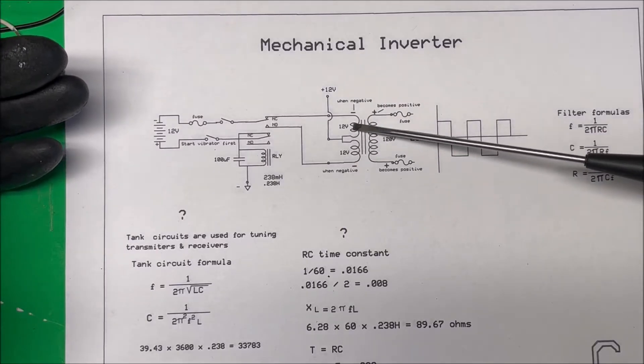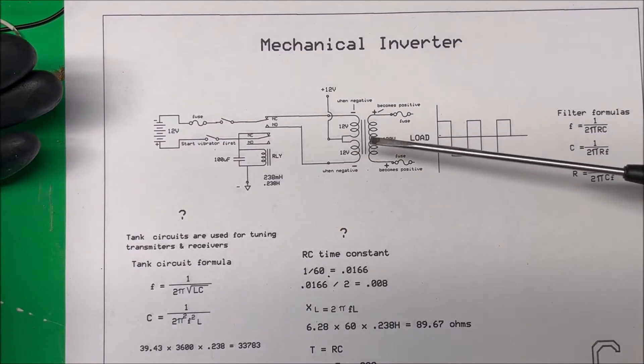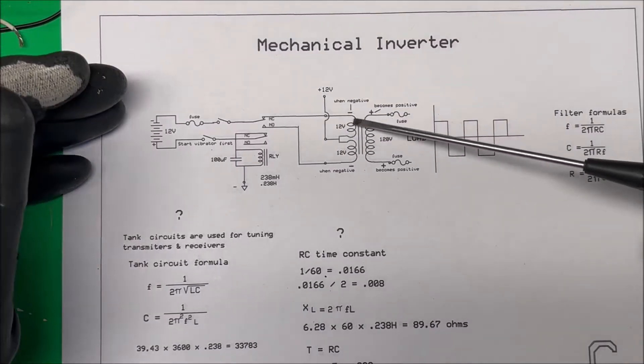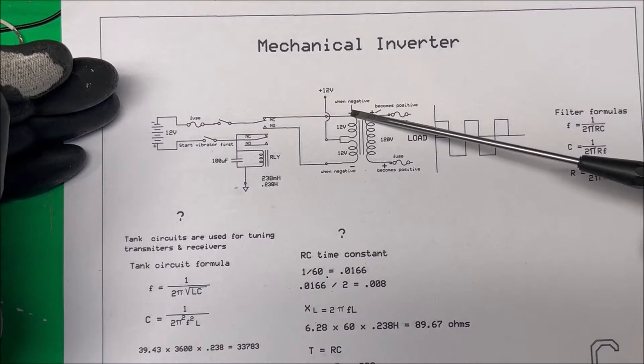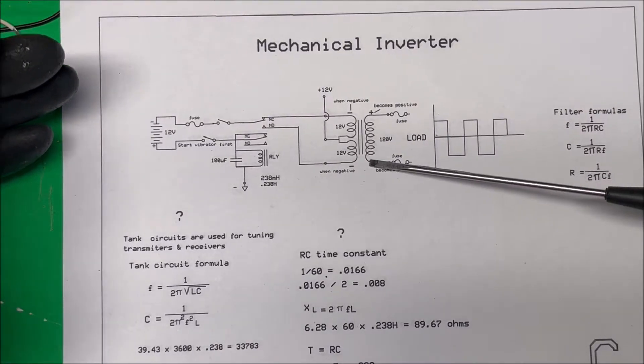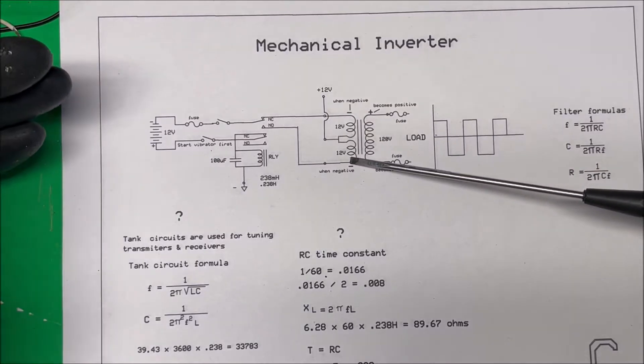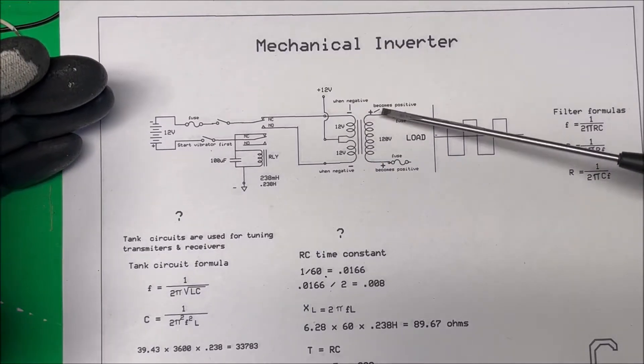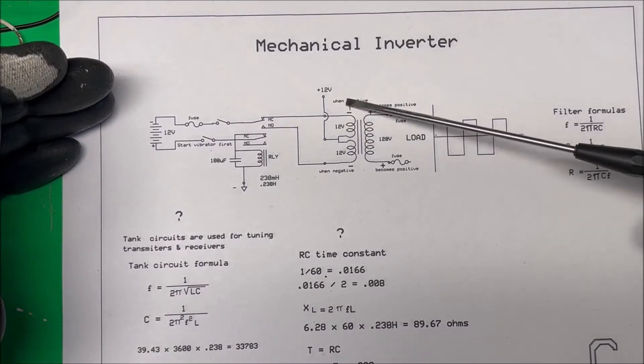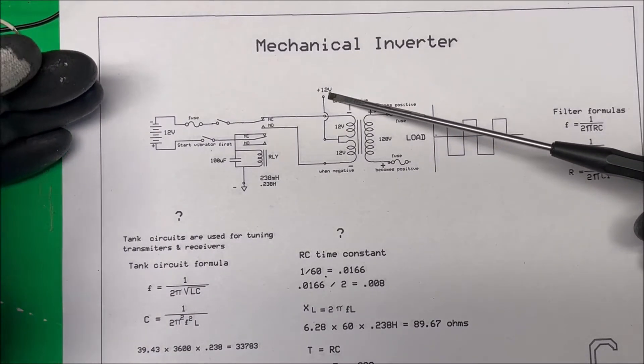What happens is when you energize this coil and there's a negative up here, then this side becomes positive and this side becomes negative. And then if you switch this down here and put a negative down here, this becomes positive and this becomes negative. So this switches back and forth.